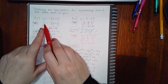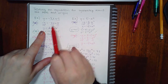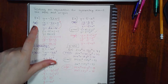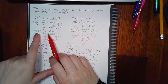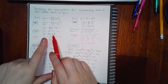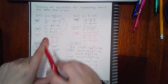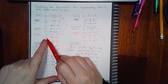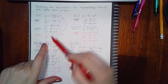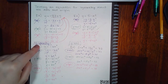For x-axis symmetry, I plugged in negative y for y, divided by negative 1 to isolate y, and ended up with positive 8x and negative 5, which does not equal the original — so no x-axis symmetry. For y-axis symmetry, plugging in negative x gives positive 8x and positive 5, which also does not equal the original — no y-axis symmetry. For origin symmetry, plugging in negative y and negative x simultaneously gives negative 8x minus 5, which does not equal the original either. So this equation has no symmetry whatsoever.